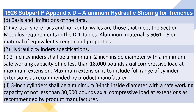2. Hydraulic cylinders specifications. i. 2-inch cylinders shall be a minimum 2-inch inside diameter with a minimum safe working capacity of no less than 18,000 pounds axial compressive load at maximum extension.